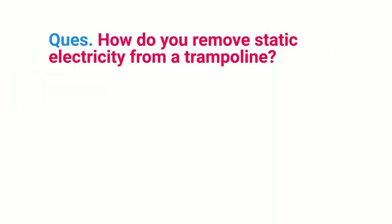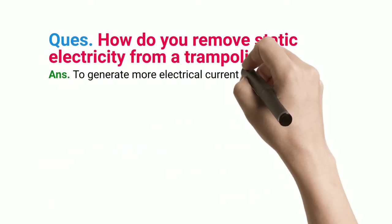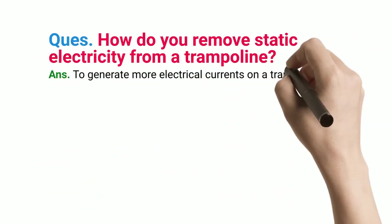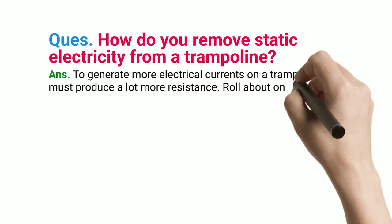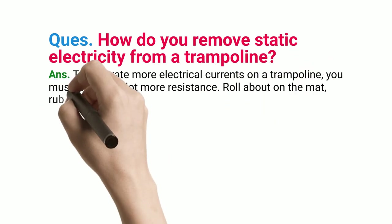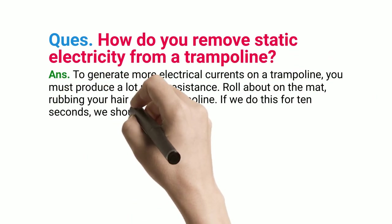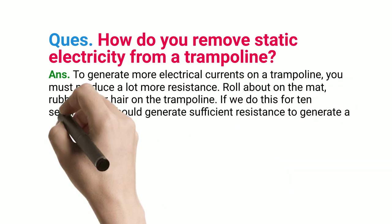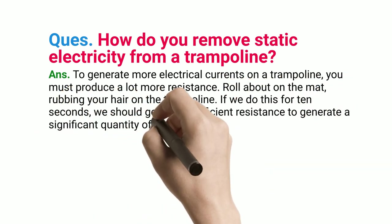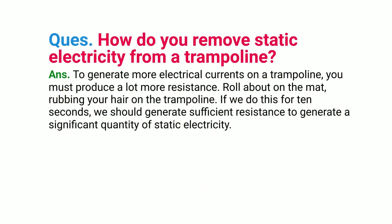Q: How do you remove static electricity from a trampoline? ANS: To generate more electrical currents on a trampoline, you must produce a lot more resistance. Roll about on the mat, rubbing your hair on the trampoline. If we do this for 10 seconds, we should generate sufficient resistance to produce a significant quantity of static electricity.